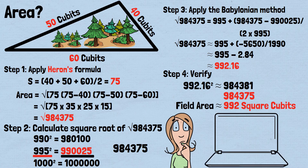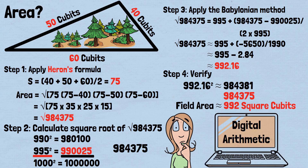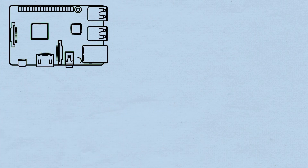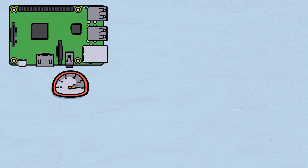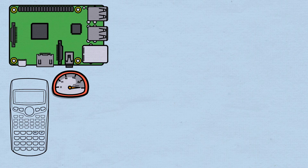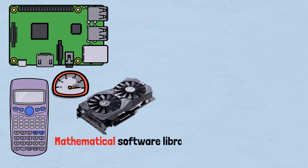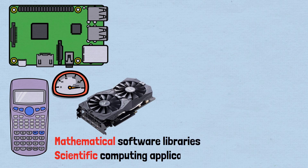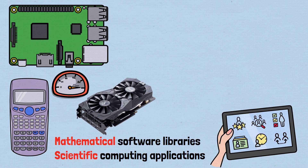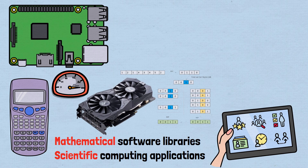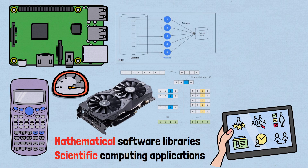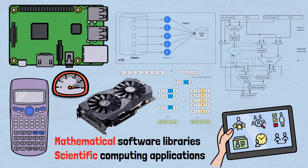Today's computers use essentially the same algorithm, with some optimizations for digital arithmetic. Modern processors implement the Babylonian method in hardware for speed. The algorithm appears in calculator chips, graphics processing units, mathematical software libraries, and scientific computing applications. Modern implementations include optimizations like better initial guesses using bit manipulation, parallel processing for multiple calculations, and specialized hardware for floating-point arithmetic.